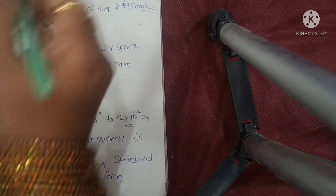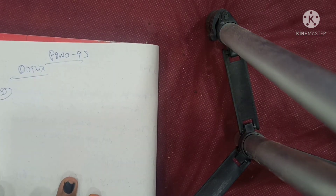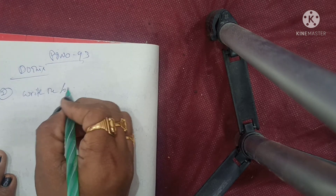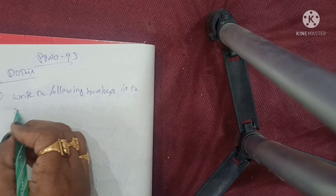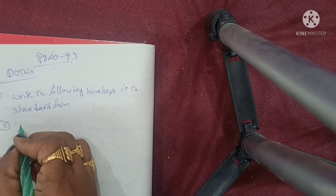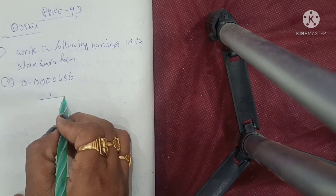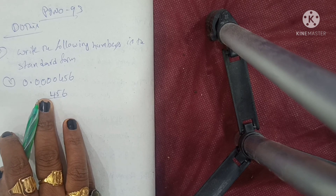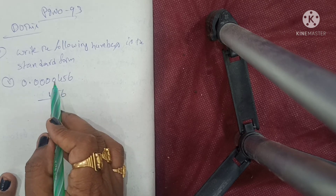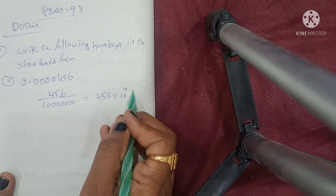Second question on page number 93: write the following numbers in standard form. First one: 0.0000456. How to write — after the decimal point, count zeros: 1, 2, 3, 4, 5, 6, 7. So convert to 4.56 into 10 to the power of minus 7.